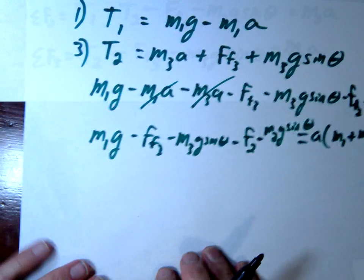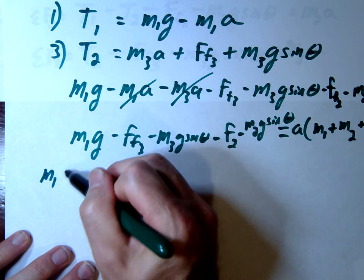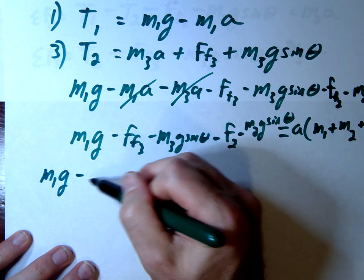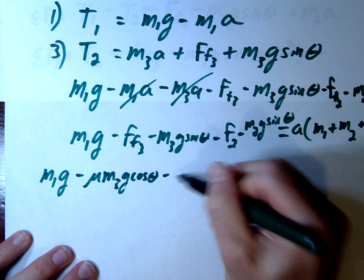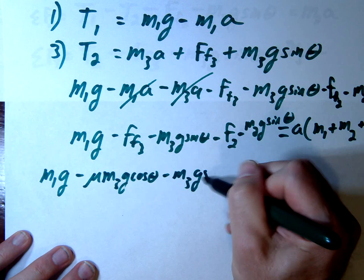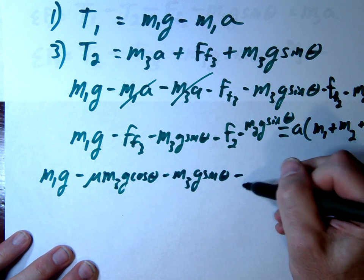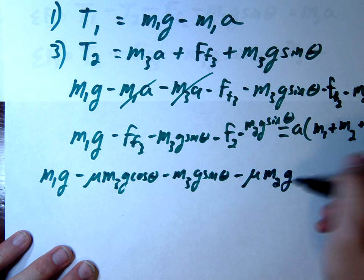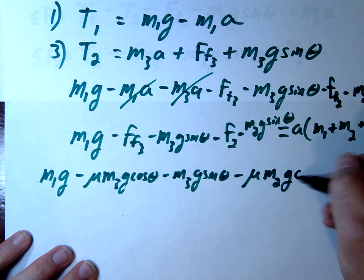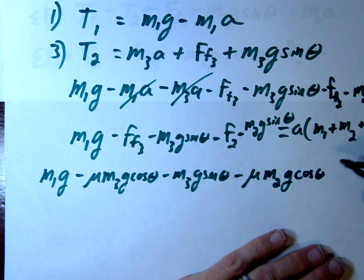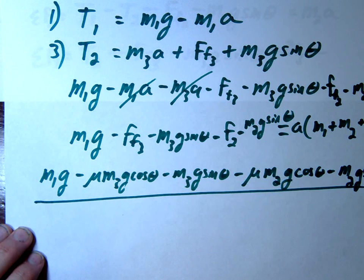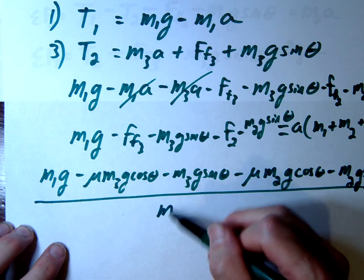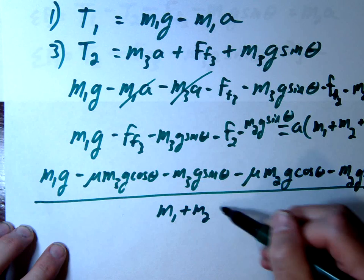Alright, so here's going to be our final solution. We're going to have M1G minus M3G cosine minus M3G sine minus M2G sine. All of that divided by M1 plus M2 plus M3.